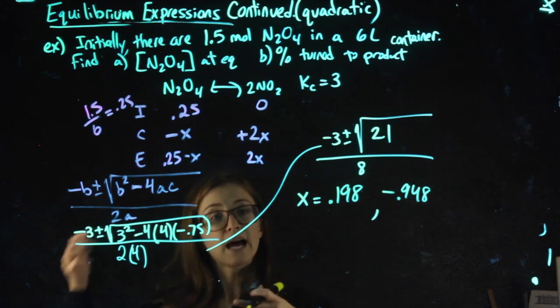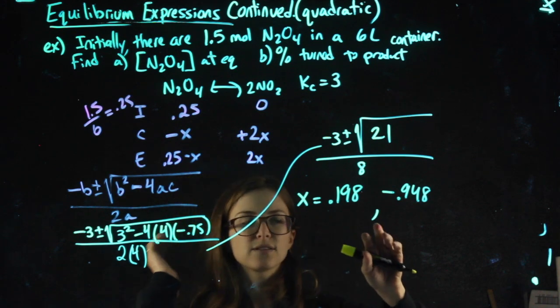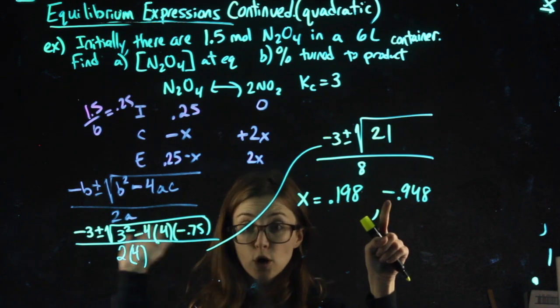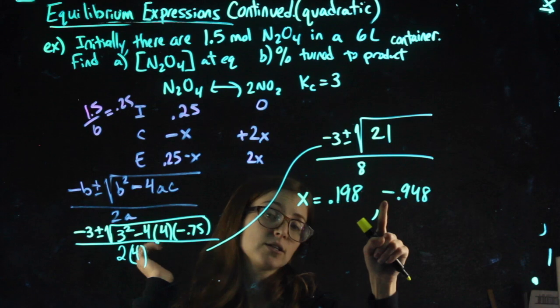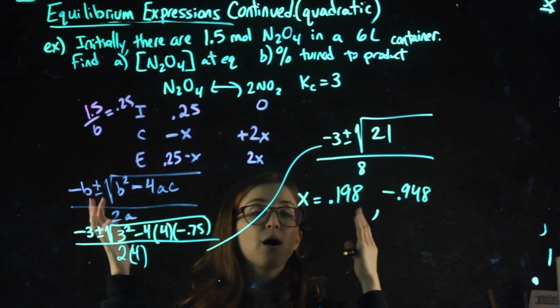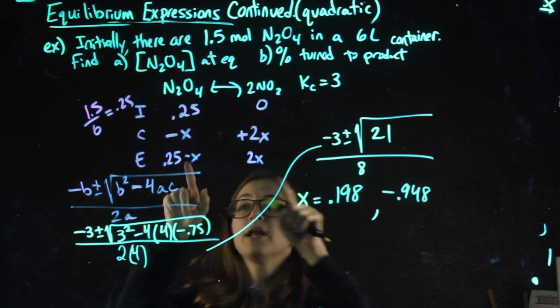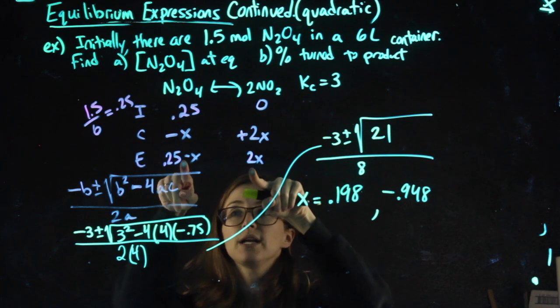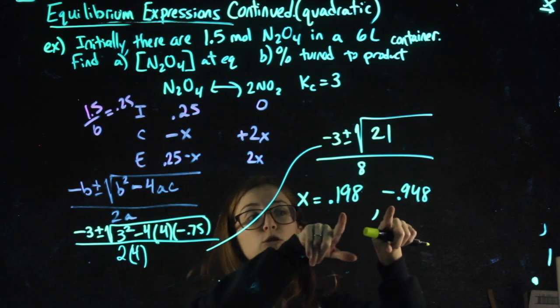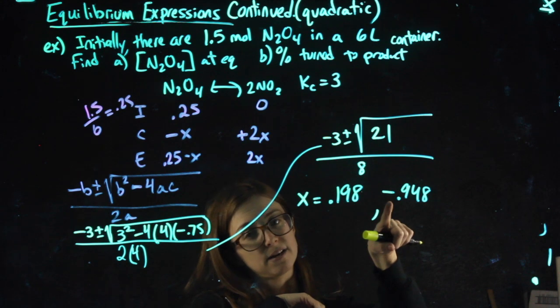Now again, in the last video I told you, I think it was the last video, negative x's are okay. Sometimes the negative one is the one we want. How we know which one we want is when we plug them back in, we need positive equilibrium values. So don't rule this out just because it's negative.